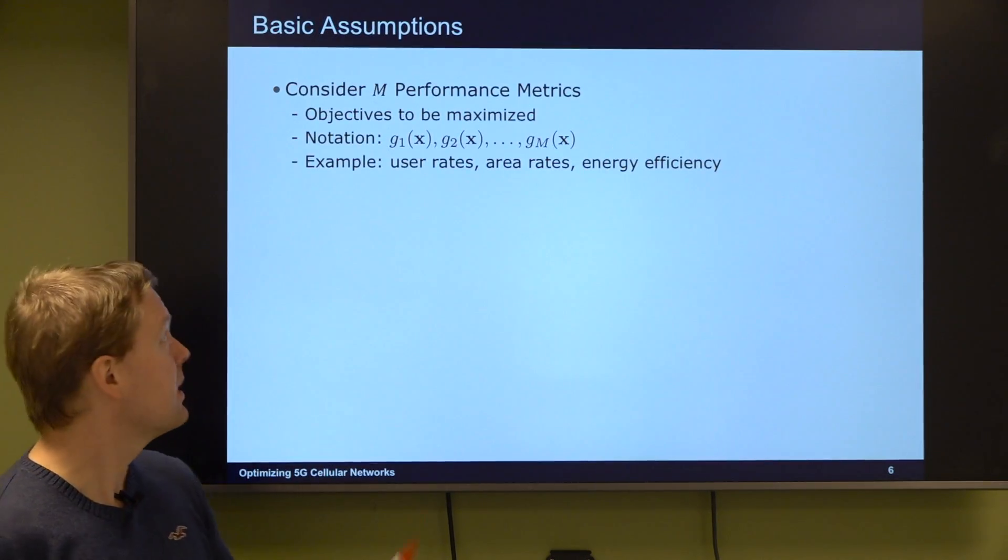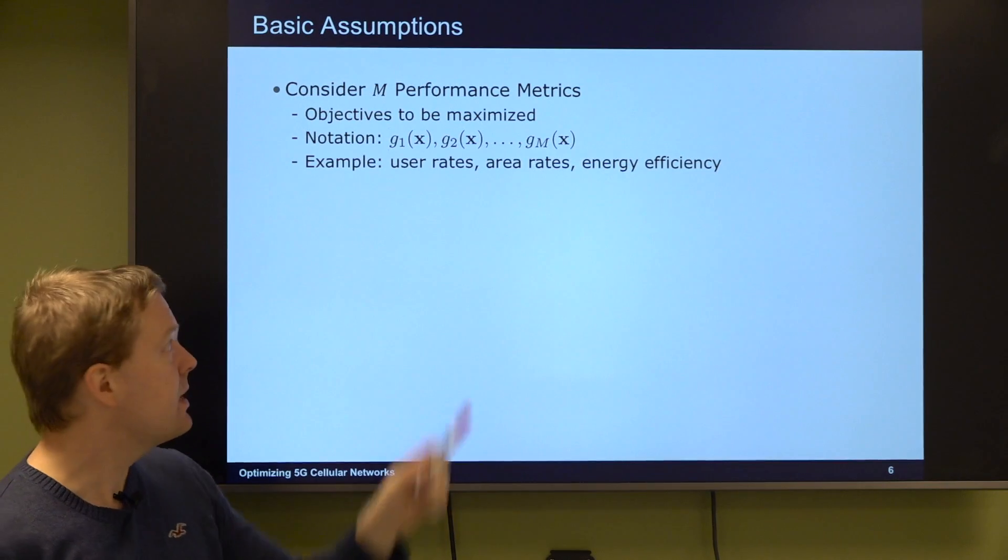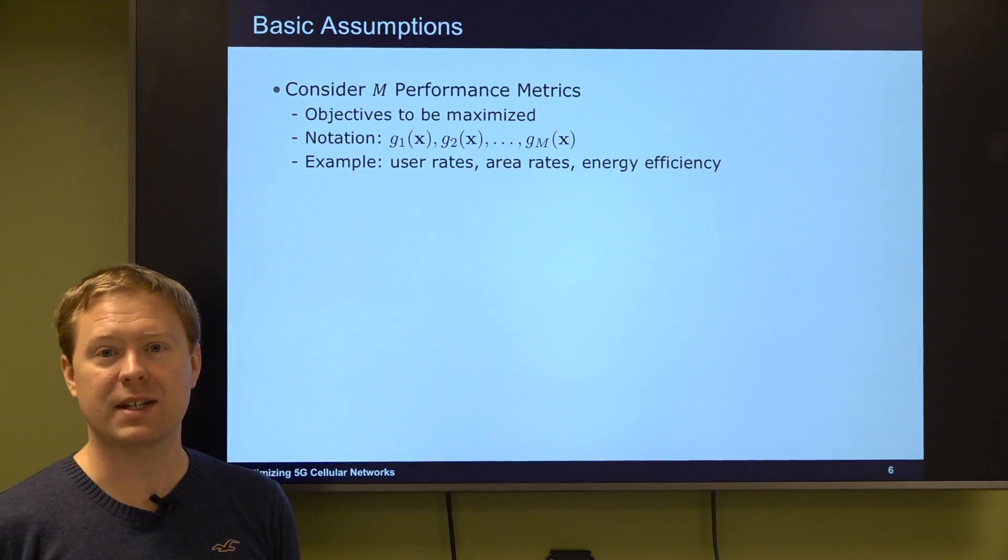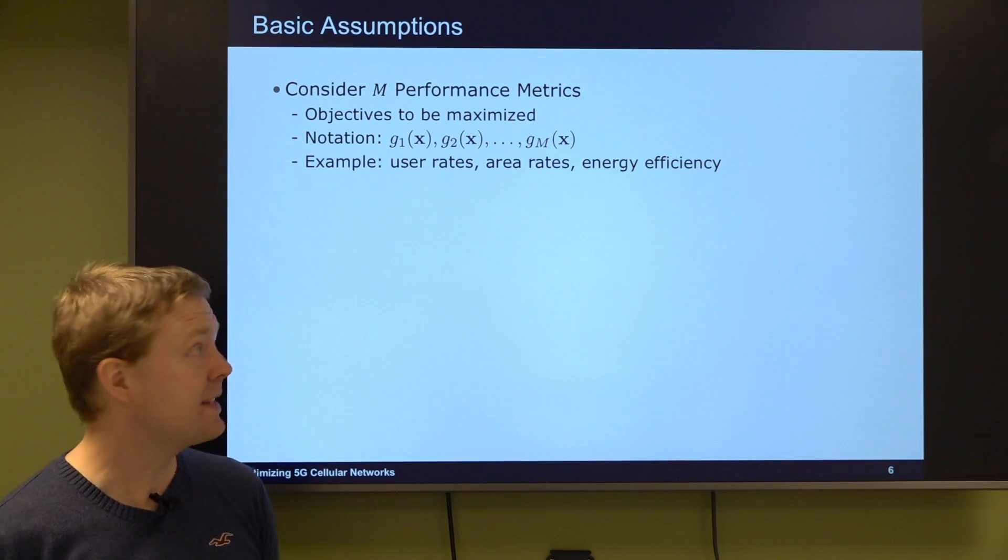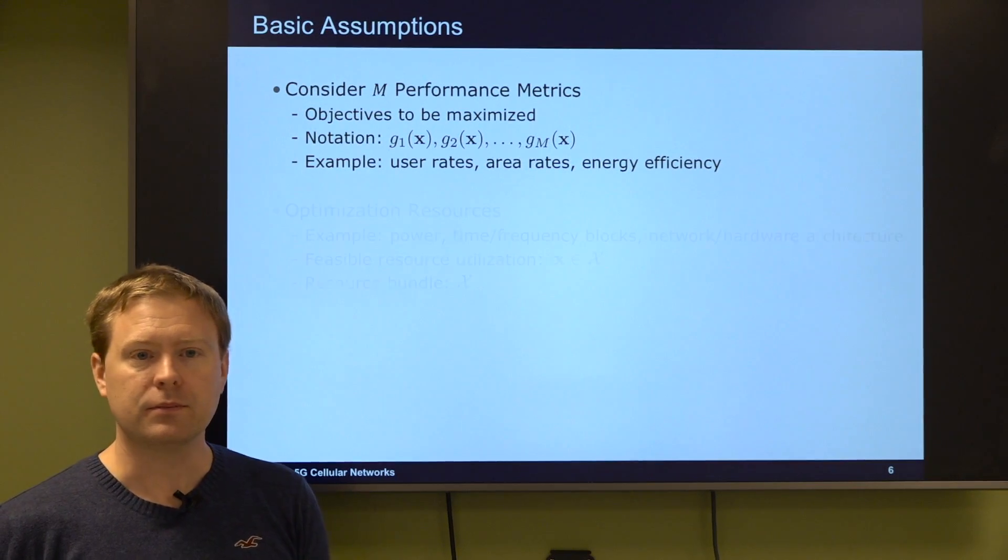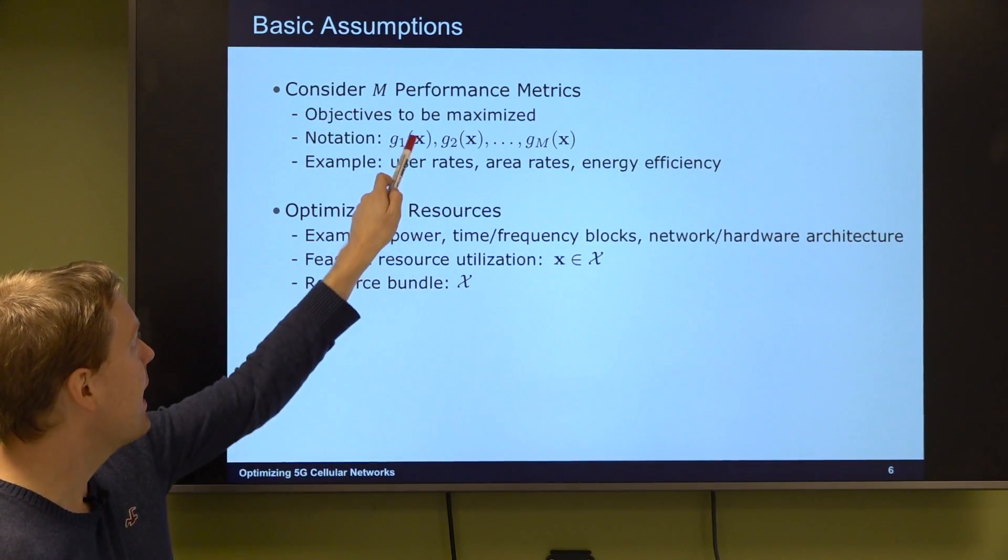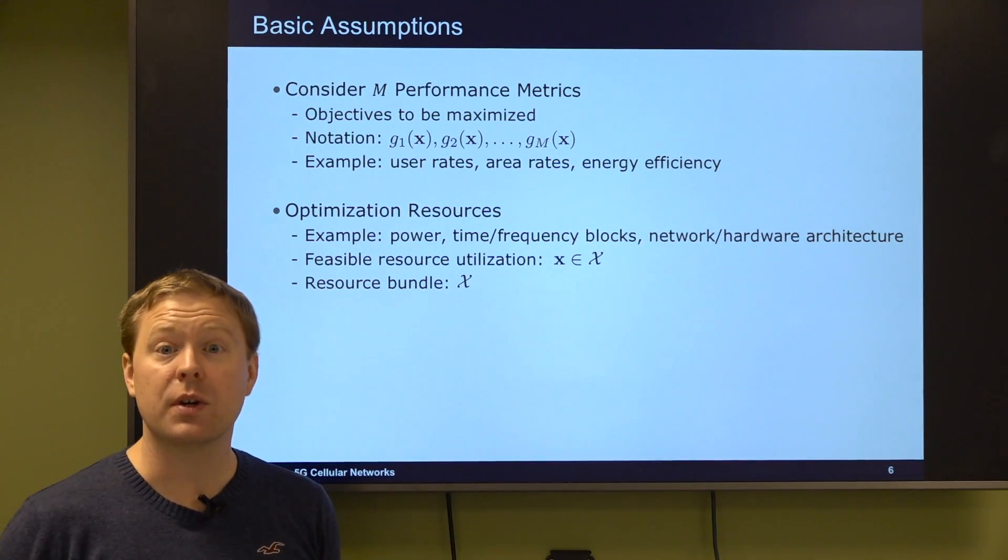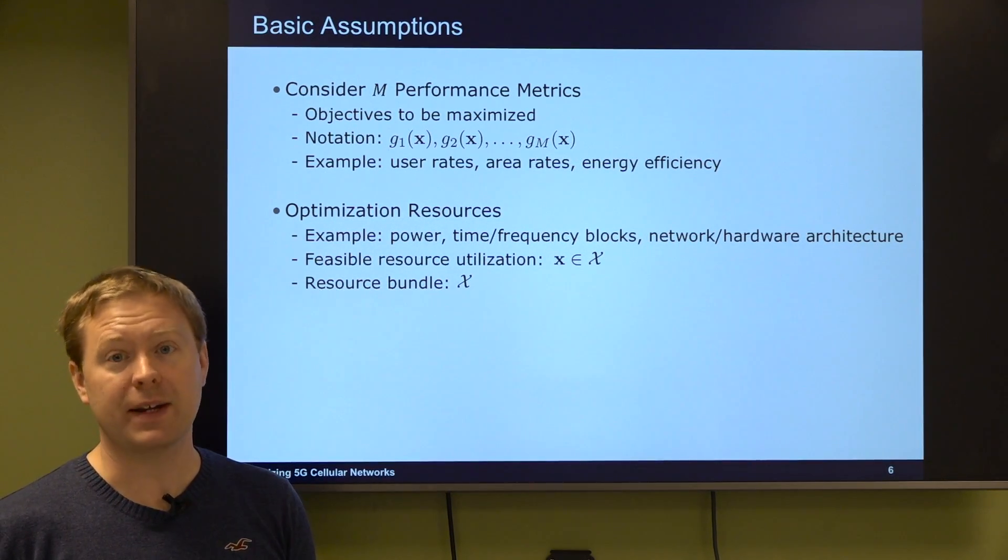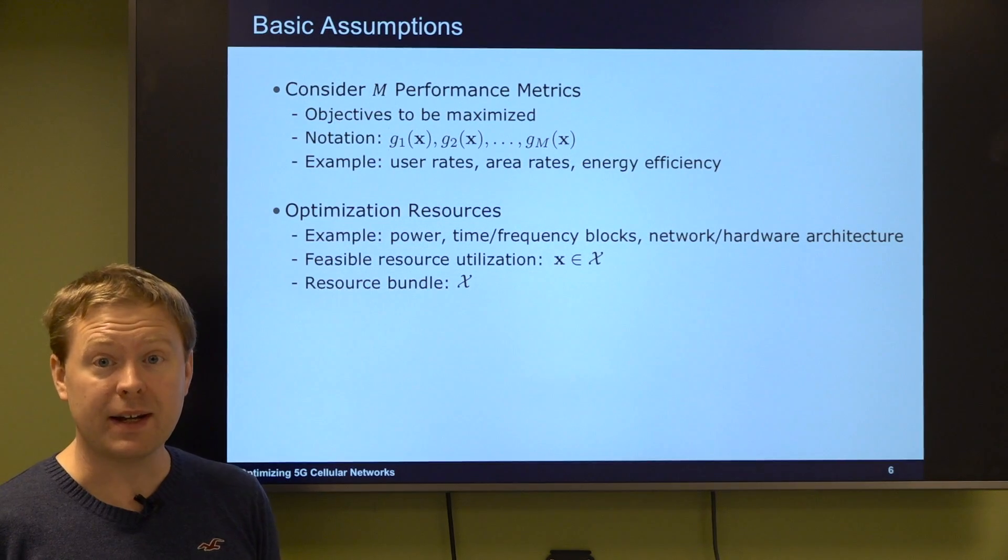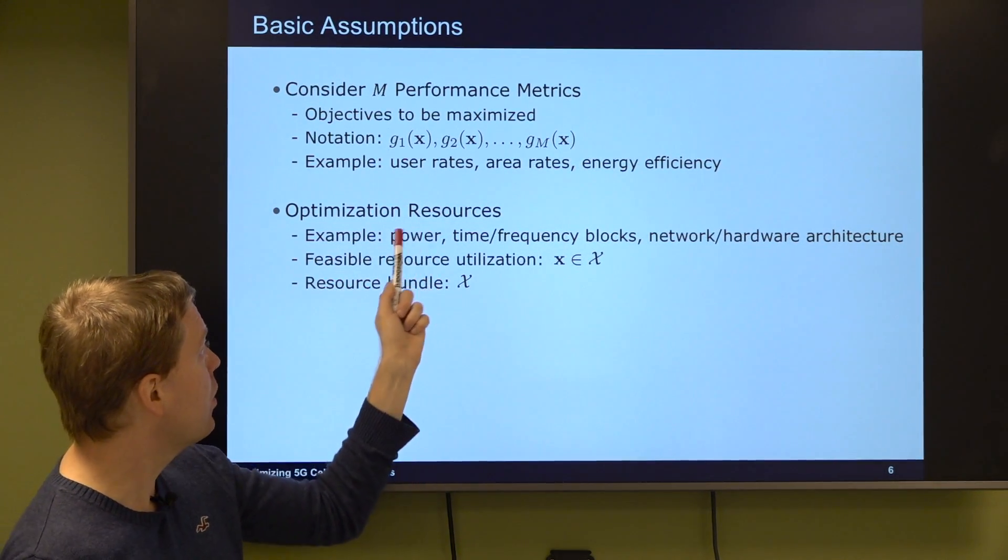Let's go through some basic assumptions. Say that we have n performance metrics that we care about. These are objectives that should be maximized, functions g1, g2, gm and all of them are functions of choices we are making characterized here by a vector x. This function could be user rate, area rate, energy efficiency. A feasible resource utilization is to pick x from something that we call calligraphic X which is the resource bundle.